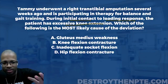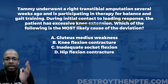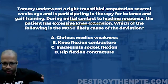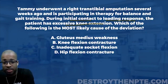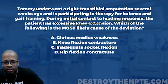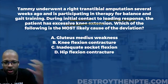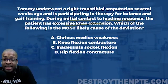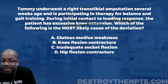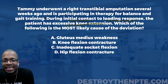Answer A is gluteus medius weakness. The gluteus medius is a hip muscle responsible for hip abduction. If it's weak, we know the patient will have difficulty with hip abduction. The gait deviation associated with gluteus medius weakness is Trendelenburg. The key question is: when do we primarily see Trendelenburg? Is it at initial contact, loading response, mid-stance, terminal stance, or mid-swing?